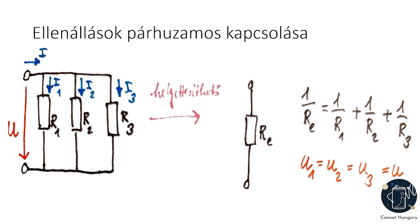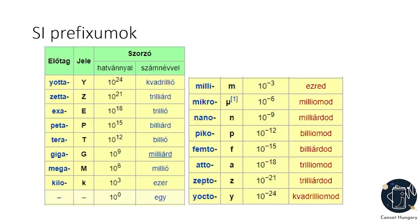Ezekkel az alapképletekkel bármilyen bonyolult áramkör eredő ellenállása kiszámítható. Például hogyha van két darab 10 ohmos ellenállásunk: egy darab használata esetén az eredő 10 Ω; sorosan kapcsolva az eredő 20 Ω; párhuzamosan kapcsolva az eredő 5 Ω. Végül útravalóként: mérnöki feladatok megoldásánál elengedhetetlen az SI prefixumok és a számok nagyságrendjének készségszintű ismerete. Sziasztok!